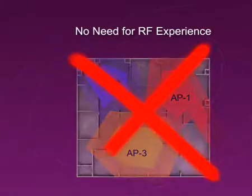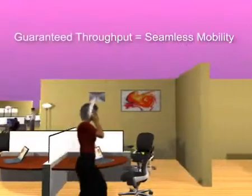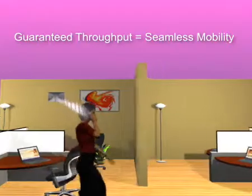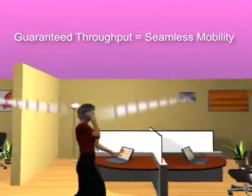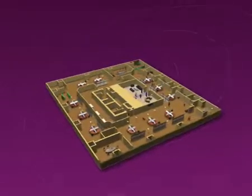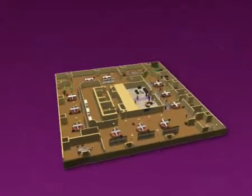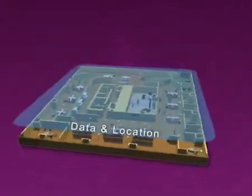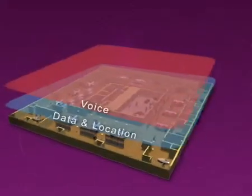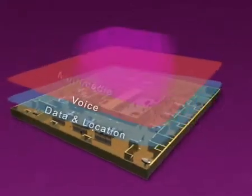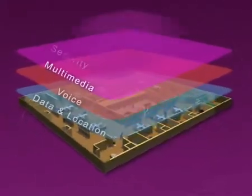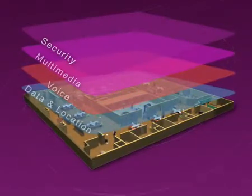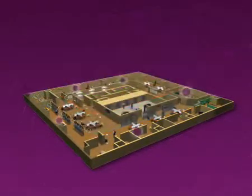You don't need to be an RF expert either. Unlike other solutions, Extracom's architecture guarantees throughput. In an Extracom system, all access points transmit on the same channel, creating blankets of coverage. This architecture allows up to four blankets to be deployed simultaneously, and access points can be placed anywhere, multiplying network throughput and capacity.